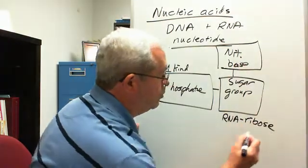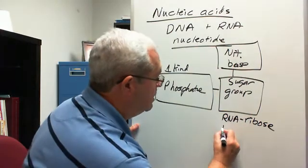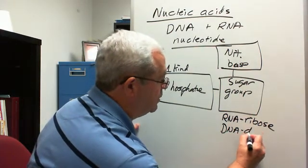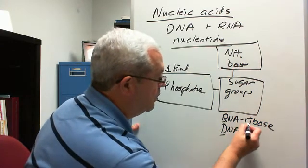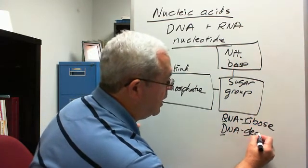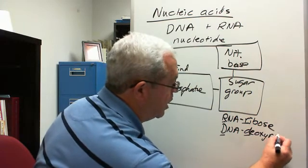The RNA sugar group is ribose and the DNA sugar group has the longer name, starts with D. Again, not a coincidence that they both start with D and both start with R in this case. The DNA sugar group is deoxyribose.